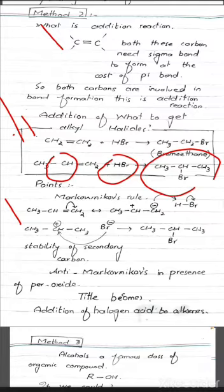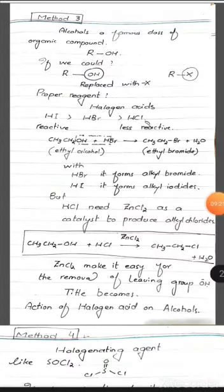اگر کوئی Markovnikov's rule follow نہ کروانا چاہے اور anti-Markovnikov کی طرف جانا چاہے تو وہ peroxide استعمال کر سکتا ہے۔ اس method کا title: جس family کو ہم نے use کیا وہ alkenes — اور اس کے سامنے halogen acid جیسے HBr، HCl رکھی — یہ substitution نہیں بلکہ addition ہے — تو نام بنے گا: addition of halogen acid to alkenes۔